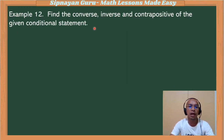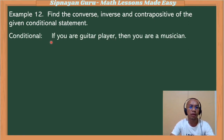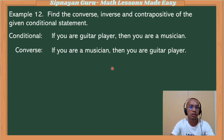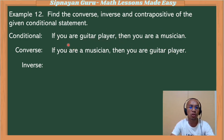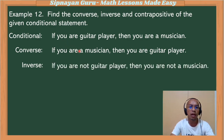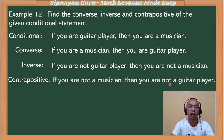Now in this particular statement, we will find the converse, inverse, and contrapositive. First: if you are a guitar player, then you are a musician. Its converse: if you are a musician, then you are a guitar player — we switch the hypothesis and conclusion. Its inverse: if you are not a guitar player, then you are not a musician — we negate both. For the contrapositive: if you are not a musician, then you are not a guitar player — we switch and negate.